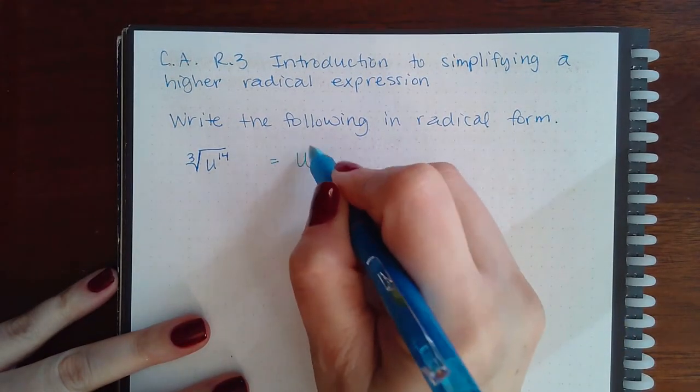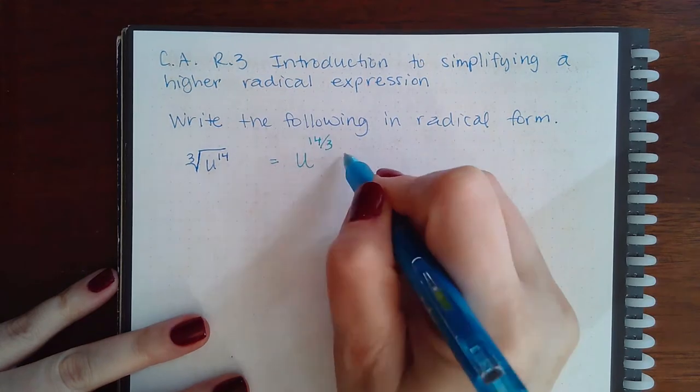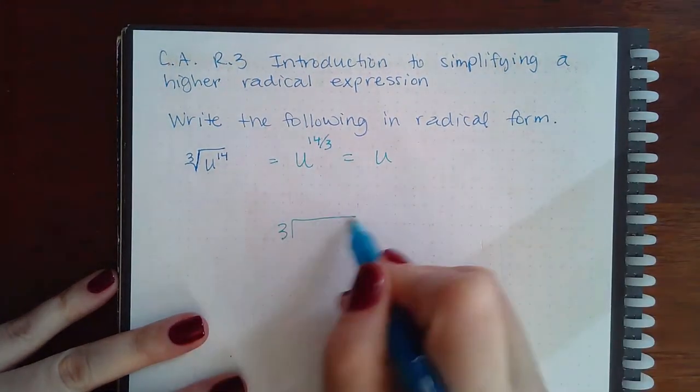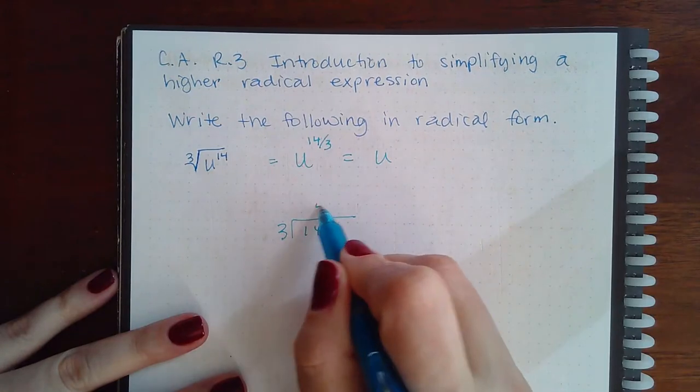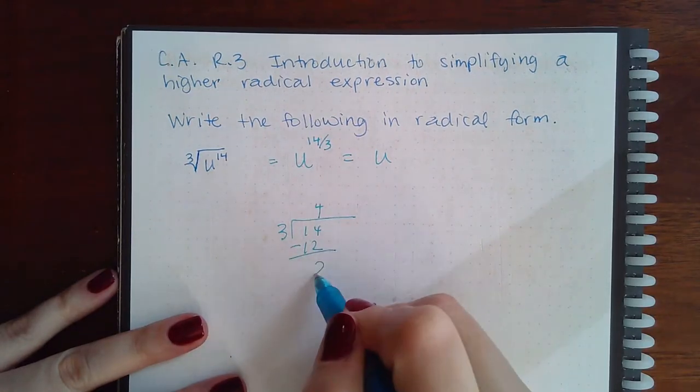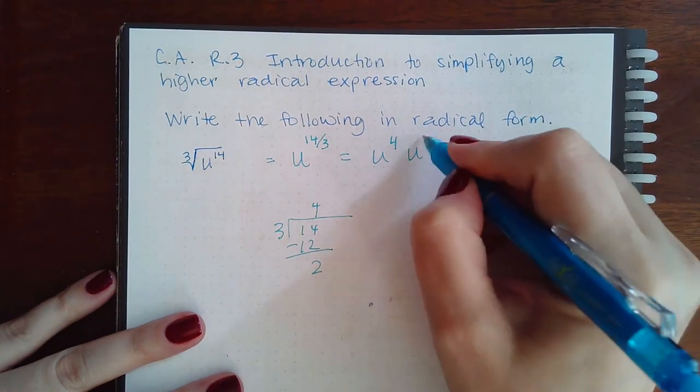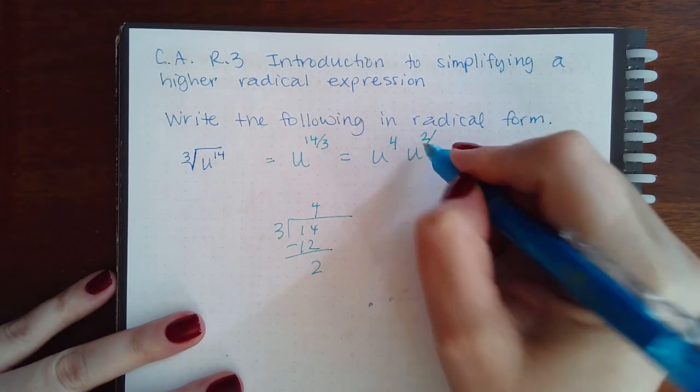So we do u to the 14 over 3, and then 3 goes into 14. Let's see, 3 goes into 14 four times, but that's only 12, so we still have 2 left over. So it goes in 4 times with 2 left over, but remember this is the denominator out of 3.